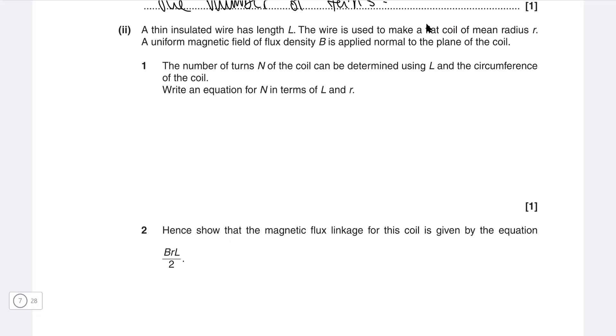Part two, we have a thin insulated wire with length L, and this has been turned into a coil with mean radius r. The number of turns can be determined using the circumference, which is equal to 2 pi r. Write an equation for n in terms of L and r.